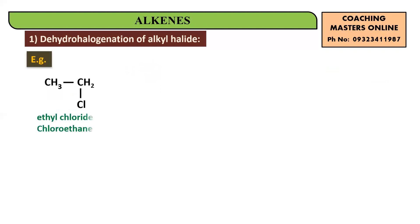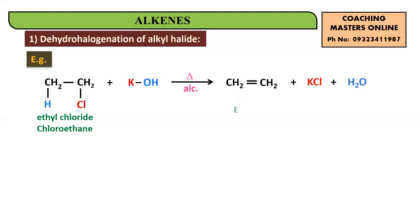For example, take ethyl chloride (chloroethane). You add KOH in alcoholic conditions and heat it. The H of the first carbon (written as CH2H) and OH of KOH combine to give water; Cl and K combine to give KCl.